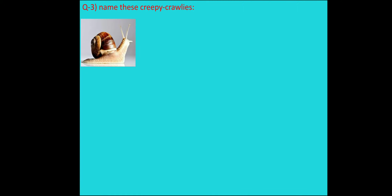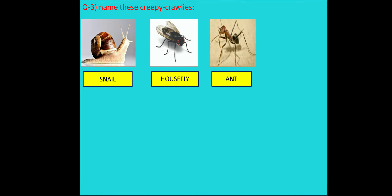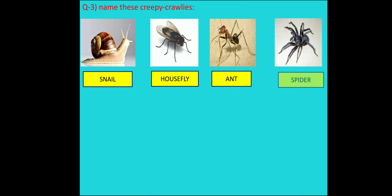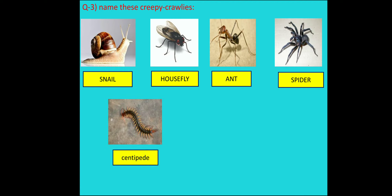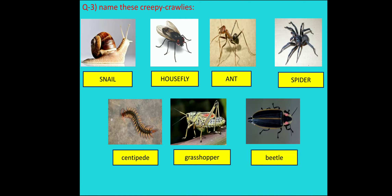Now question number 3: Name these creepy crawlies. First one is the snail (S-N-A-I-L). Second one is the housefly (H-O-U-S-E-F-L-Y). Third one is the ant (A-N-T). Fourth one is the spider (S-P-I-D-E-R). Next is the centipede (C-E-N-T-I-P-E-D-E). Next is the grasshopper (G-R-A-S-S-H-O-P-P-E-R). And the last one is the beetle (B-E-E-T-L-E). This exercise you have to write only in the textbook, not in the notebook.